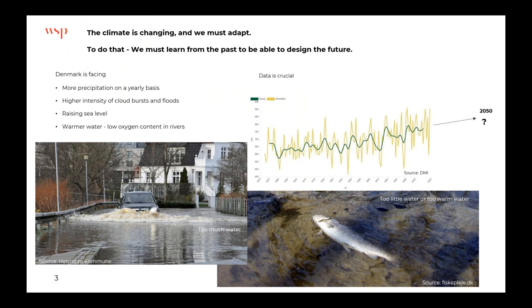What we see around the world, and of course also in Denmark, is we are facing more frequent situations with too much or too little water. This is a situation from a Danish city called Holsterbo, where within the last 20 years they have had five situations with floods. We can also see more situations with very low water levels in the summer and also warmer water, which in this case caused fish deaths.